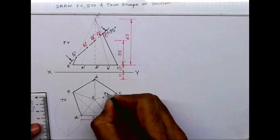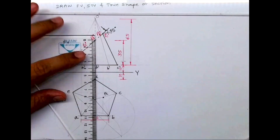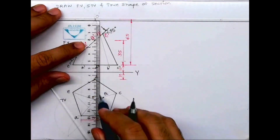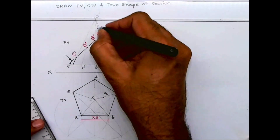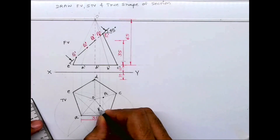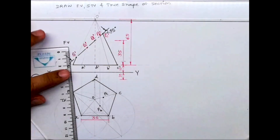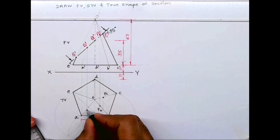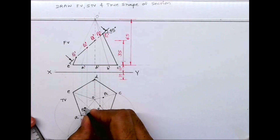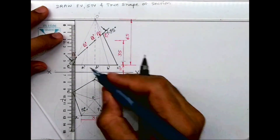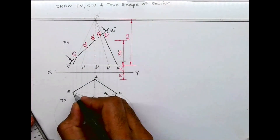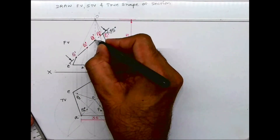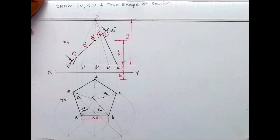Similarly, I'll project this line straight down — PB dash, wherever it cuts on OB, that is point PB. Then project PA dash, wherever it cuts on line OA, that is point PA. And wherever it cuts on OE, that is point PE.